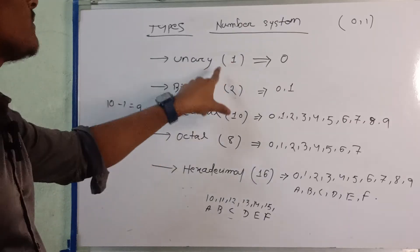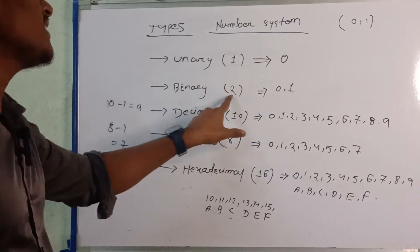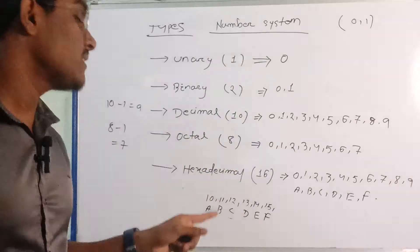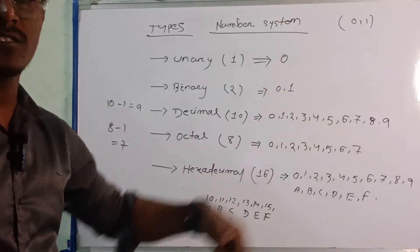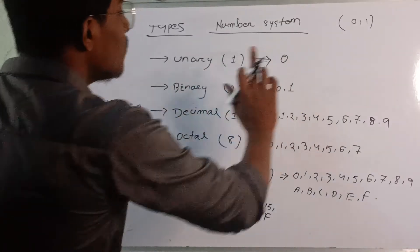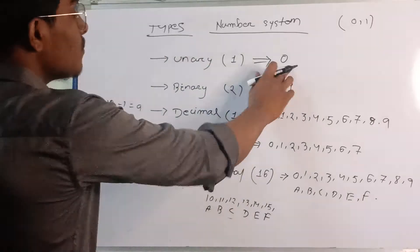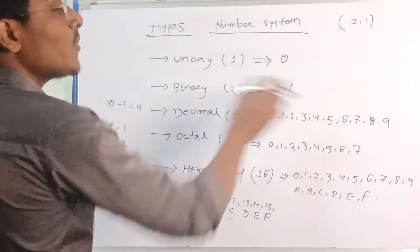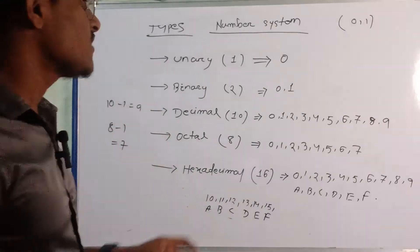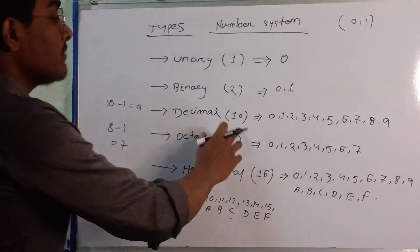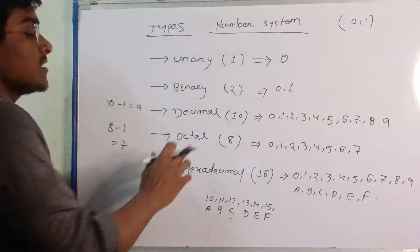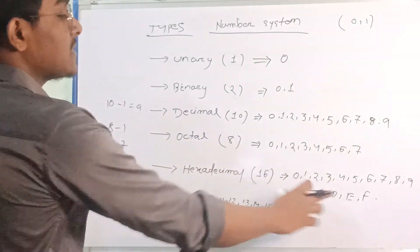To summarize: unary uses only 0; binary uses 0 and 1; decimal means base 10 using digits 0-9; octal means base 8 using digits 0-7; hexadecimal means base 16 using 0-9 and then A through F. These are the memory indications for each number system type.